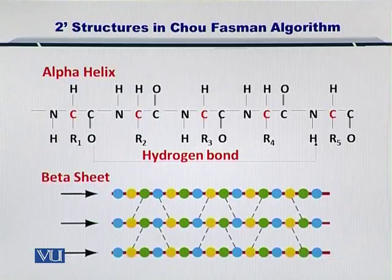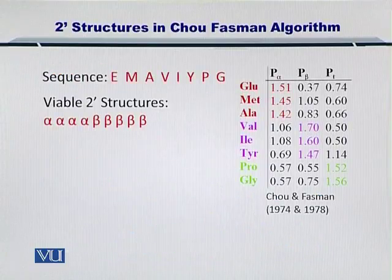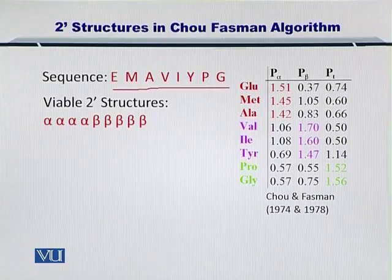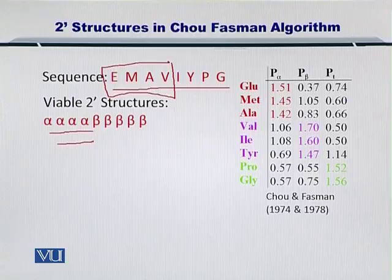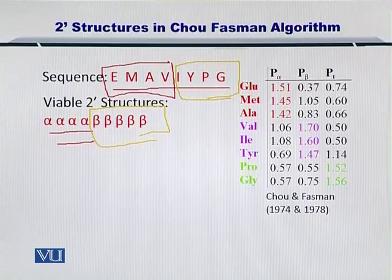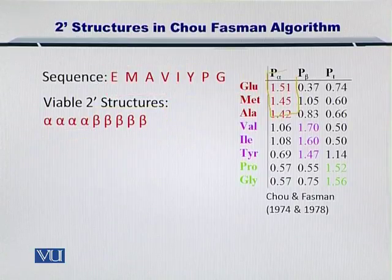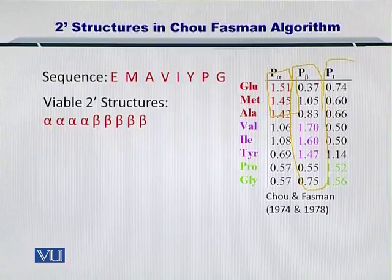The role of neighbors in the formation of secondary structures cannot be ignored. Going back to our example, we had a sequence of amino acids, and we wanted to see which secondary structures could be formed. Let's take one possibility in which the first four amino acids make an alpha helix, and the next four make beta sheets. There can be multiple combinations, because each amino acid may have a higher propensity for forming an alpha helix, but can also form a beta sheet or a turn.